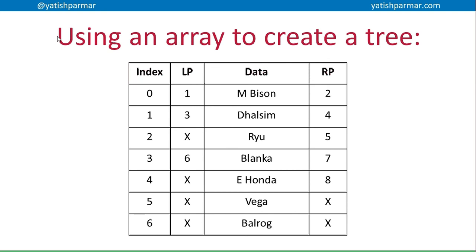Back to arrays — you can use an array to create a tree. Arrays are single data types, so you may need to look at record structures, or quite often you'd just be storing integers. M. Bison as the root node is at index zero of the array, and the left pointer points at element one, which is Dao Sim. Dao Sim has left and right pointers pointing at elements three and four, and so on. If you compare that to the tree, you can see how the tree structure matches up to the array.